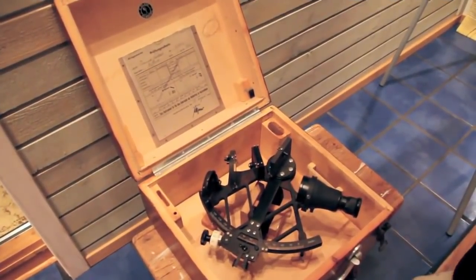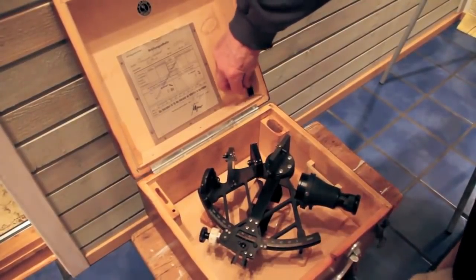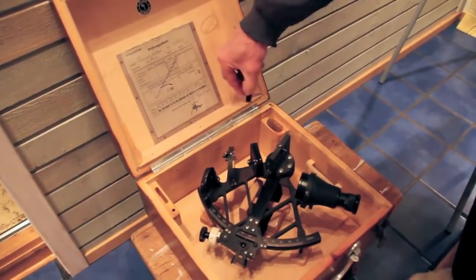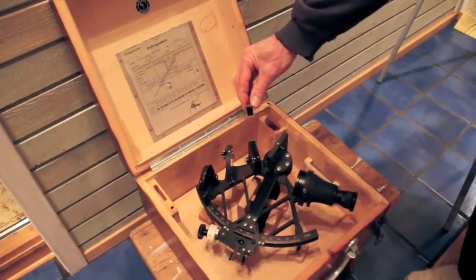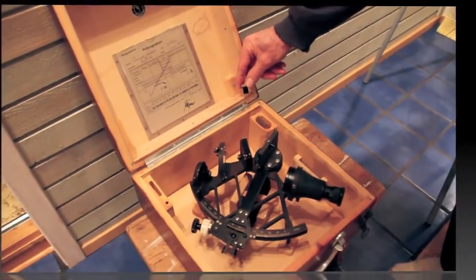This is how small my Brice mini sextant is compared to the ordinary sextant. You can see it's not much at all.